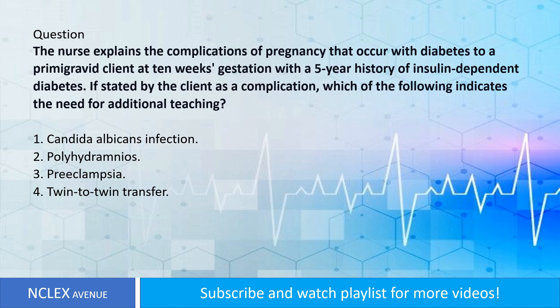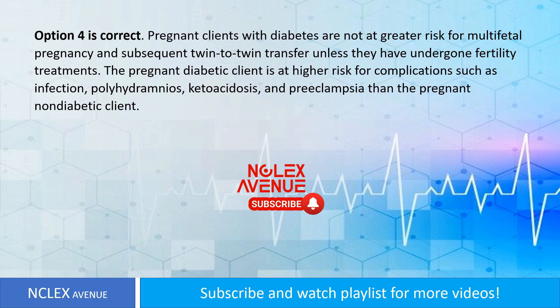Question: The nurse explains the complications of pregnancy that occur with diabetes to a primigravid client at 10 weeks gestation with a five-year history of insulin-dependent diabetes. If stated by the client as a complication, which of the following indicates the need for additional teaching? One: Candida albicans infection. Two: polyhydramnios. Three: preeclampsia. Four: twin-to-twin transfer. Answer: Option four is correct. Pregnant clients with diabetes are not at greater risk for multiple gestation and subsequent twin-to-twin transfer unless they have undergone fertility treatments. The pregnant diabetic client is at higher risk for complications such as infection, polyhydramnios, ketoacidosis, and preeclampsia. Thanks for watching — subscribe and watch the playlist for more videos.